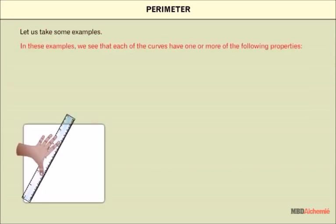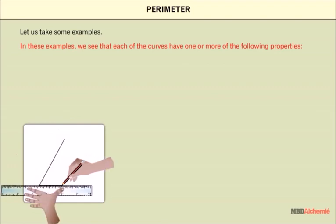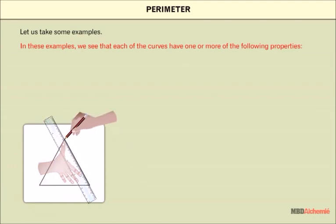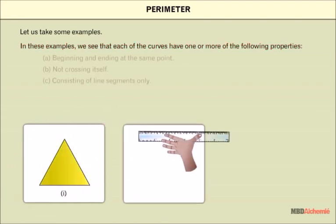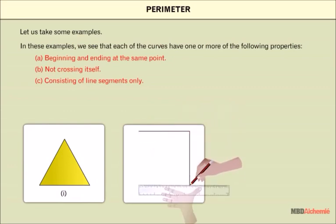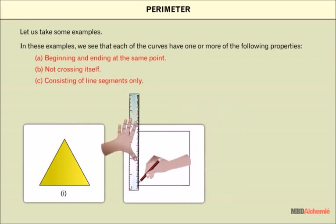Let us take some examples. In these examples, we see that each of the curves has one or more of the following properties: Beginning and ending at same point, not crossing itself, consisting of line segments only.